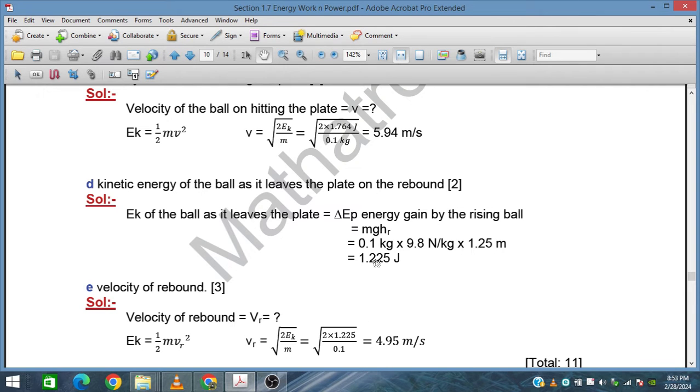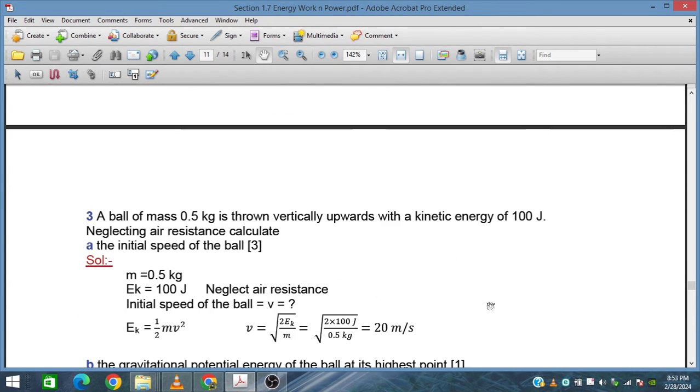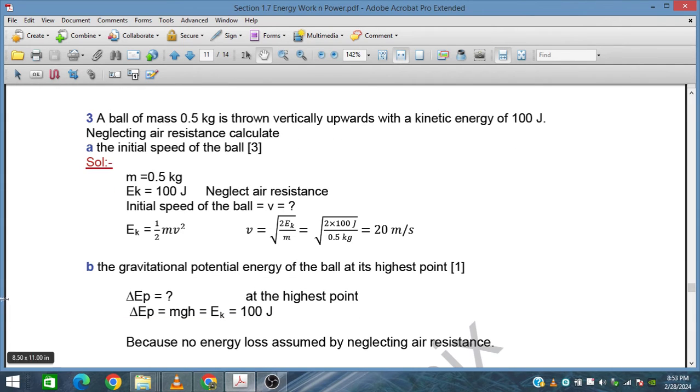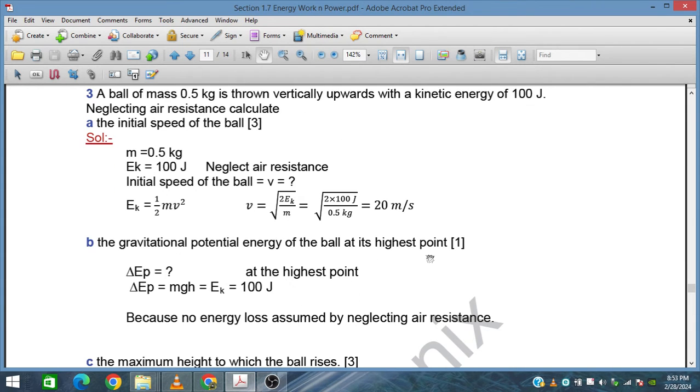A ball of mass 0.5 kg is thrown vertically upward with a kinetic energy of 100 joules. Neglecting air resistance, calculate the initial speed of the ball. Mass is given, kinetic energy is given. Initial speed is obtained from Ek = ½mv². By manipulation and plugging in the values, this is 20 meters per second.